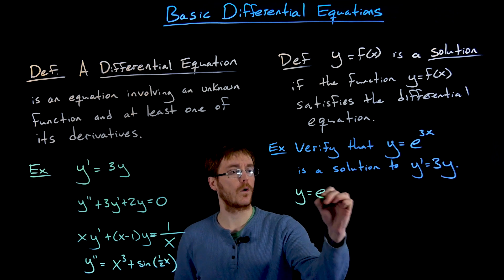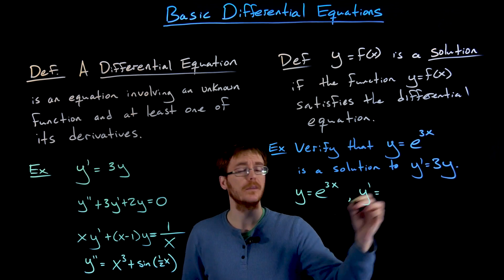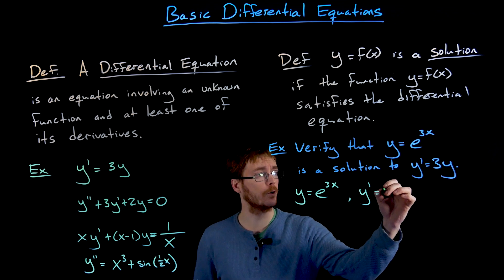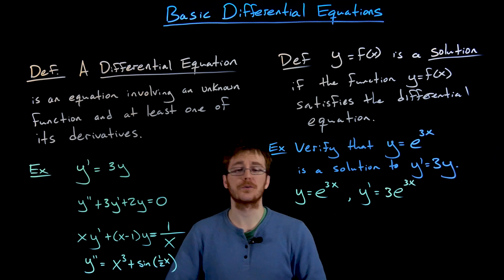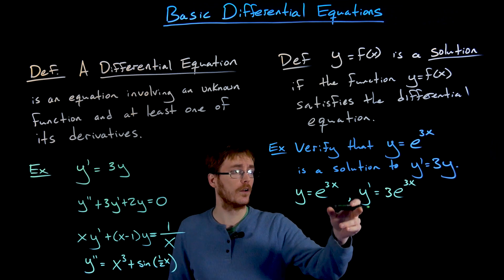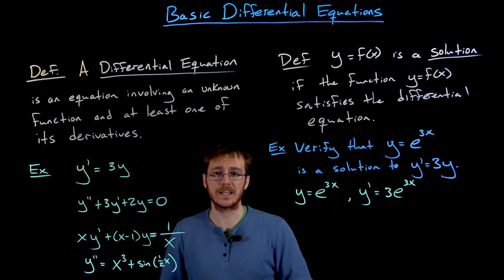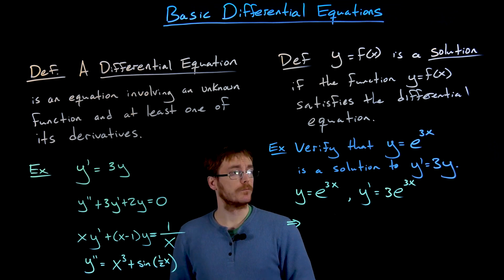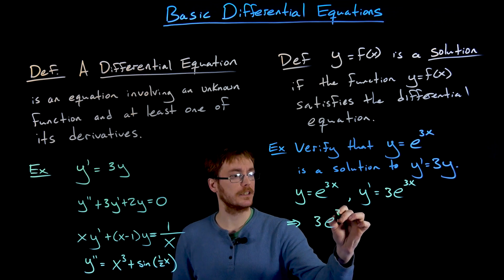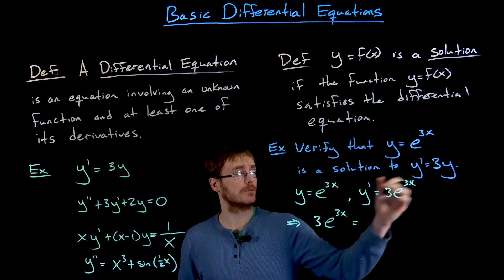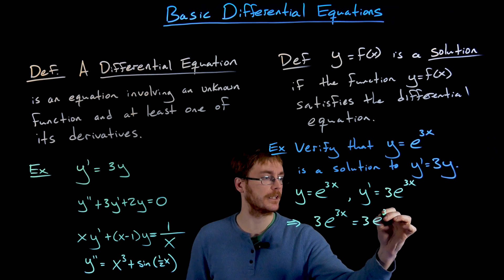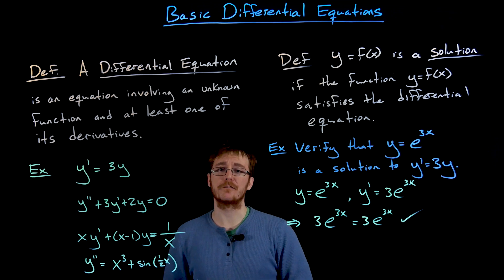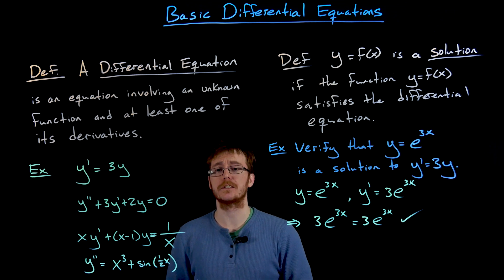We know y is equal to e to the 3x. We also need y prime, so we differentiate e to the 3x using the chain rule. The first derivative gives us three times e to the 3x. We can already see that y prime equals three times y, so the differential equation is satisfied. Plugging in: y prime is three times e to the 3x, and that has to equal three times y, which is three times e to the 3x. These quantities are exactly the same, so we have verified that y equals e to the 3x is a solution.